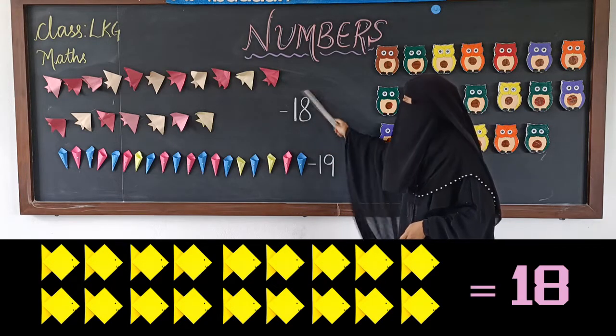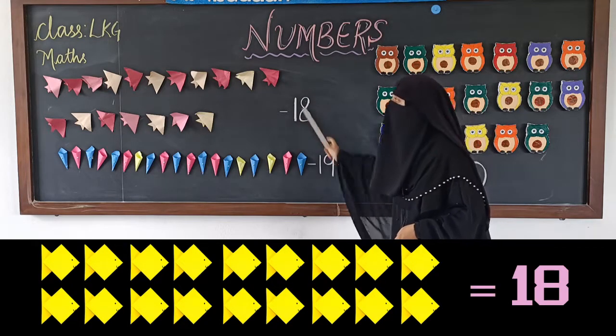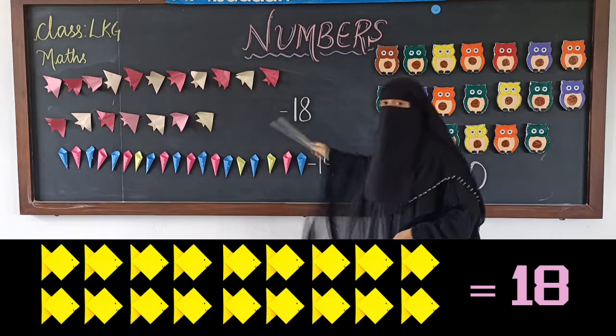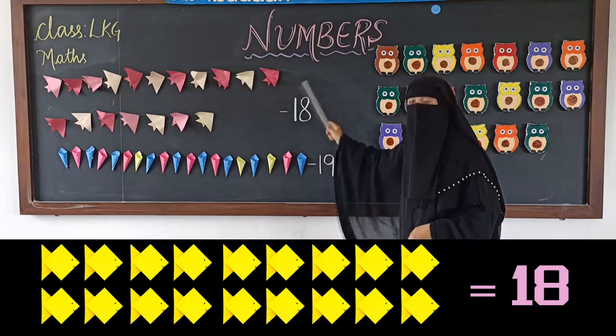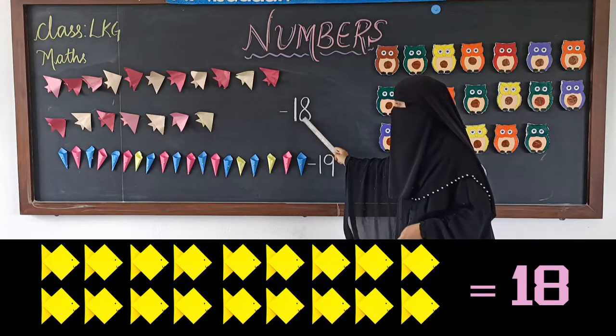1 and 8 is 18. There are altogether how many fishes? 18 fish.